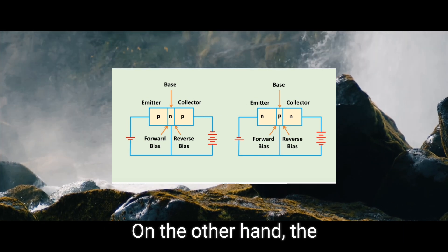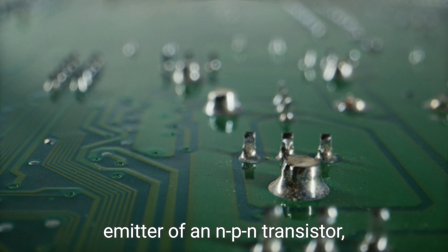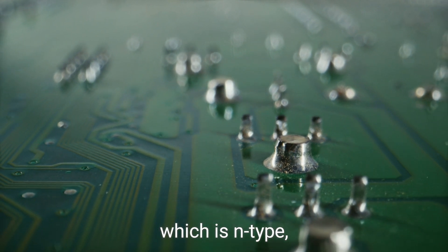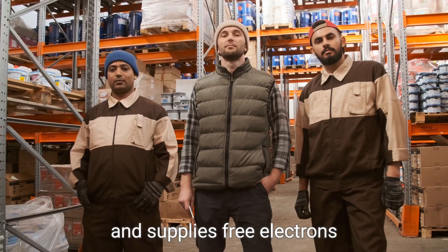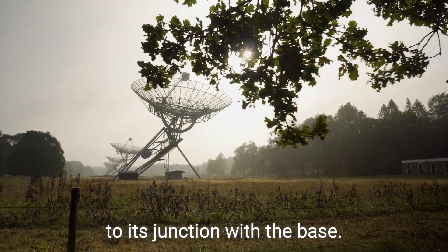On the other hand, the emitter of an NPN transistor, which is N-type, is forward biased and supplies free electrons to its junction with the base.